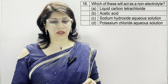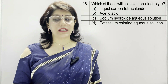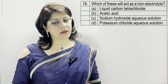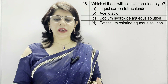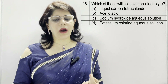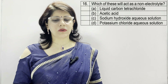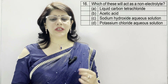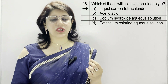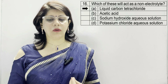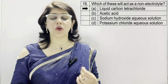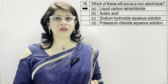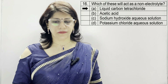In question number 16: which of these will act as a non-electrolyte? A: liquid carbon tetrachloride. B: acetic acid. C: sodium hydroxide aqueous solution. D: potassium chloride aqueous solution. The correct option is A — liquid carbon tetrachloride is a non-electrolyte because of the absence of free ions in it.